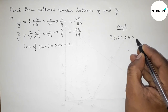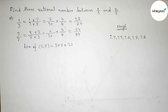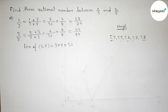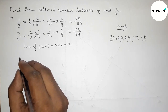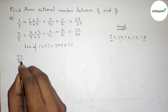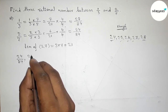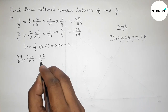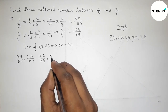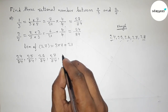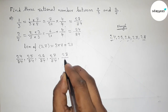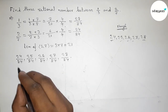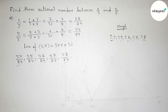Between 24 by 84 and 28 by 84, we can find 3 integers between 24 and 28, which are 25, 26, and 27. Using these we can form 3 rational numbers. Writing them all out: 24 by 84, 25 by 84, 26 by 84, 27 by 84, and 28 by 84. The three rational numbers between them are 25 by 84, 26 by 84, and 27 by 84.